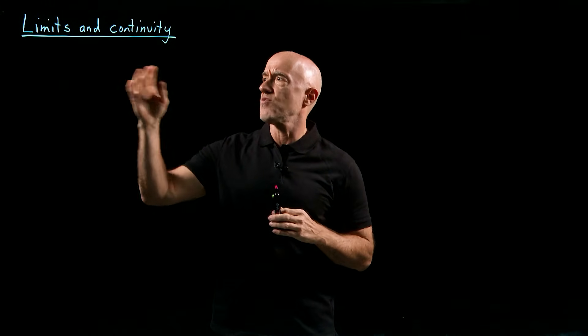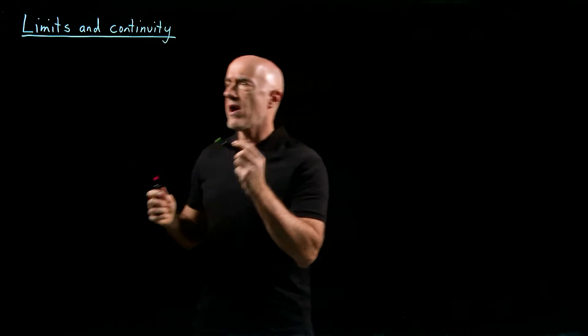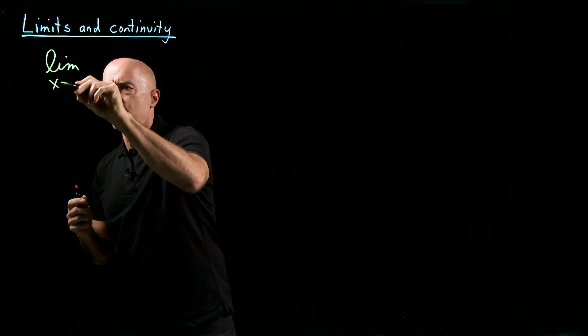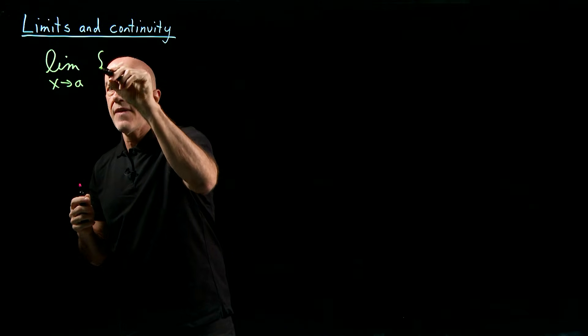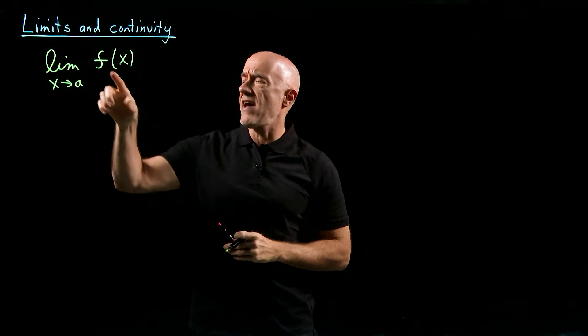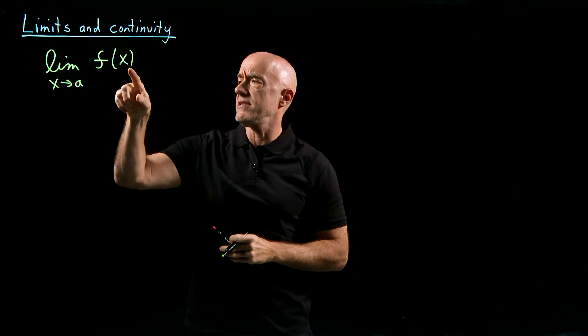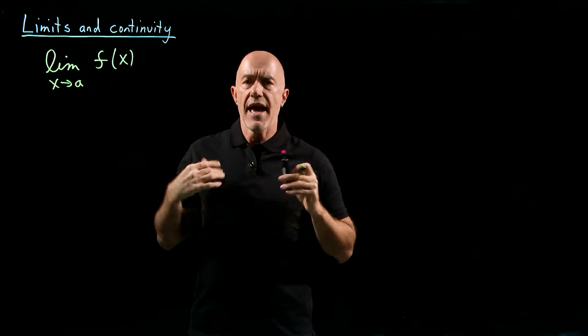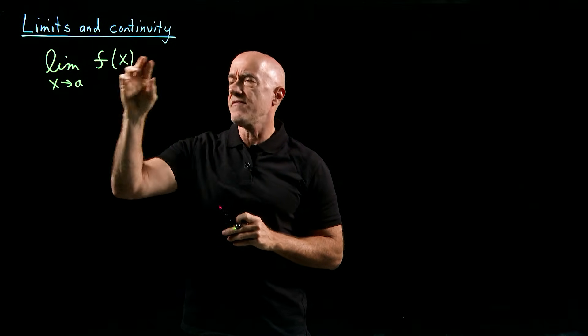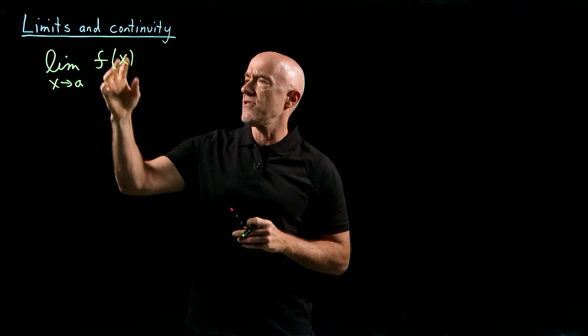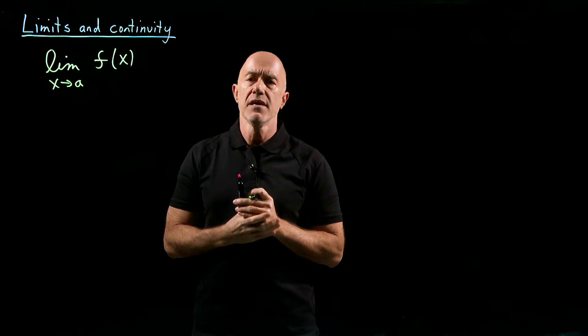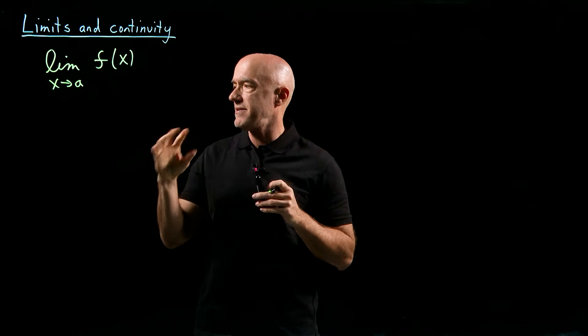We still need to understand what a limit is. So we write the limit as x goes to a of f(x). The meaning of this is: what is the value that f approaches as x approaches a? X doesn't have to be exactly at a because f(a) may be defined, but on the other hand, it may not be defined, and often in Calculus it will turn out to be 0 divided by 0.